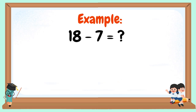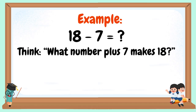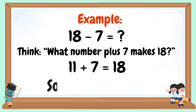37 minus 7 equals — think: what number plus 7 makes 37? 11 plus 7 equals 18. So 18 minus 7 equals 11.